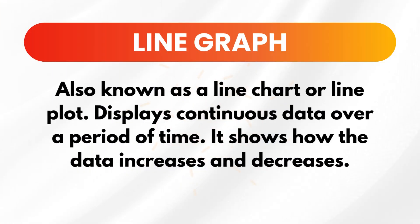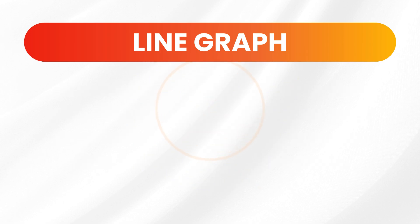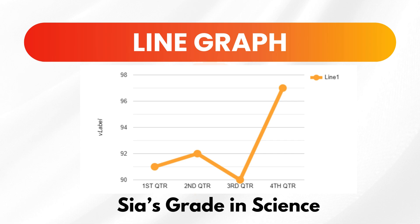Next in line is the line graph, also known as a line chart or line plot. It displays continuous data over a period of time and shows how the data increases and decreases. In the picture, we can see that Sia's grade in science is not consistent — she obtained a grade of 91 in the first quarter, 92 in the second quarter, 90 in the third quarter, and 97 in the last quarter.